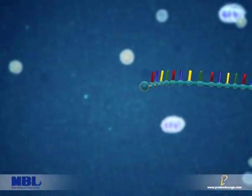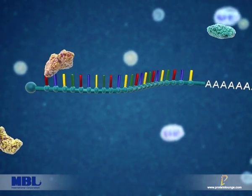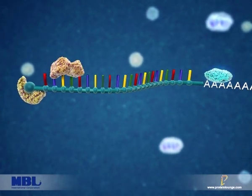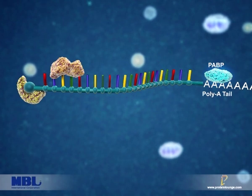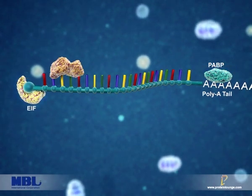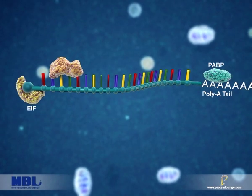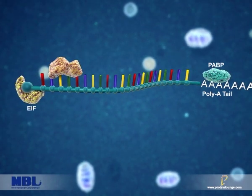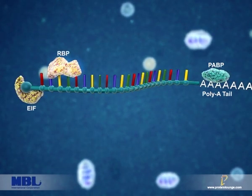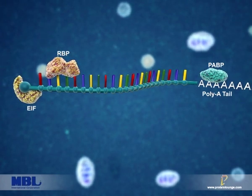Structurally, mRNA contains common binding motifs for some RNA-binding proteins, like poly-A binding protein and EIF, which can bind to mRNA species in the cell, or binding motifs for other RNA-binding proteins, like RBP X, Y, and Z, which bind to distinct sets of mRNA.